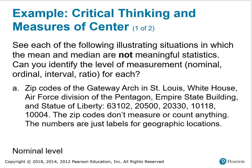For example, critical thinking and measures of center. See each of the following illustrating situations in which the mean and median are not meaningful statistics. Can you identify the level of measurement—nominal, ordinal, interval, or ratio—for each? Letter A: Zip codes of the Gateway Arch in St. Louis, White House, Air Force Division of the Pentagon, Empire State Building, and Statue of Liberty are 63102, 20500, 20330, 10118, and 10004. The zip codes don't measure or count anything. The numbers are just labels for geographic location. It would not make sense to calculate the mean and median for this, and the level of measurement is nominal. Those are names for different geographical regions.